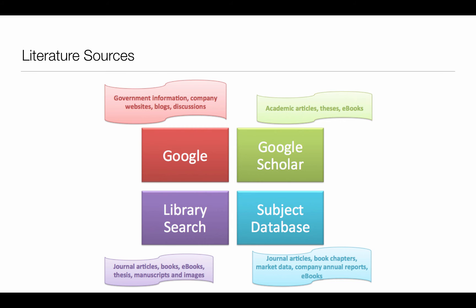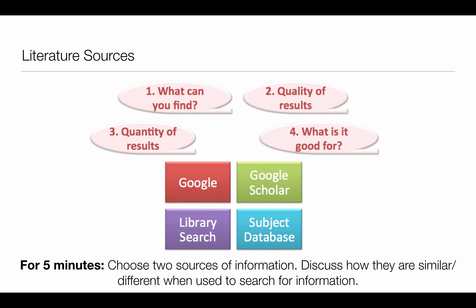Library search — going to the library, finding books and e-books — is generally very good because it's been curated by librarians who have ensured that these sources are good. Then finally you have subject databases, very similar to internet searches, such as Mintel or WGSN who put out actual reports. If you're watching this with someone, you can take five minutes, choose two sources, and discuss how they're similar and how they're different.